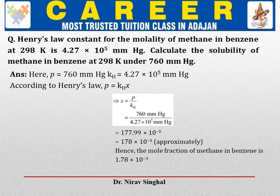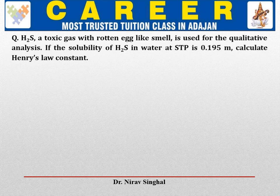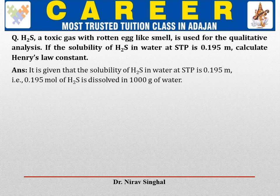Now move to the next one. H₂S, a toxic gas with a rotten egg-like smell, is used for qualitative analysis. If the solubility of H₂S in water at STP is 0.195 molar — here solubility concentration is given in terms of molality — we need to find the value of Henry's law constant KH. Molality means moles of solute dissolved in kg of solvent. Here 0.195 molar H₂S means 0.195 mol of H₂S dissolved in 1000 grams of water. So moles of H₂S is 0.195.